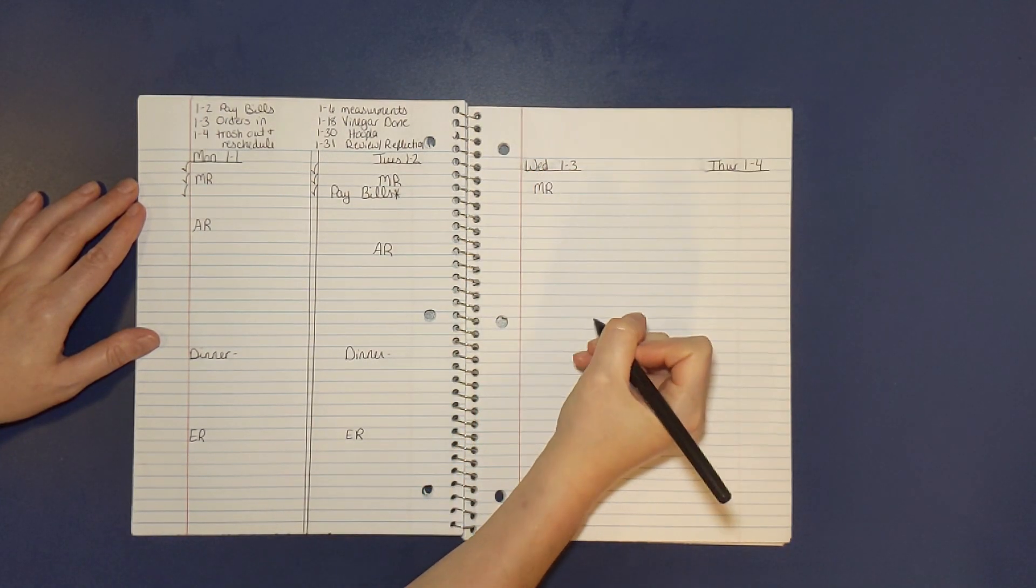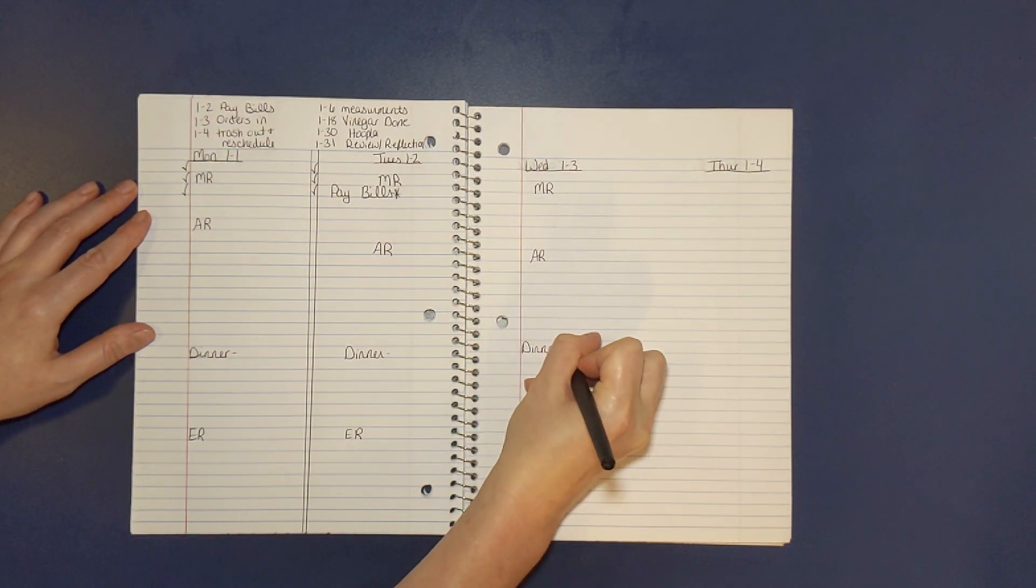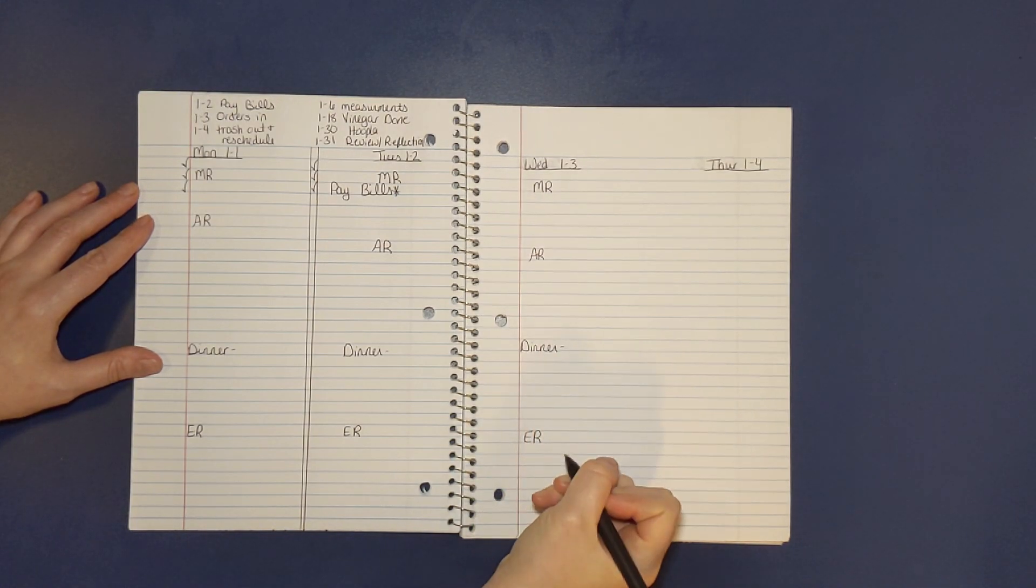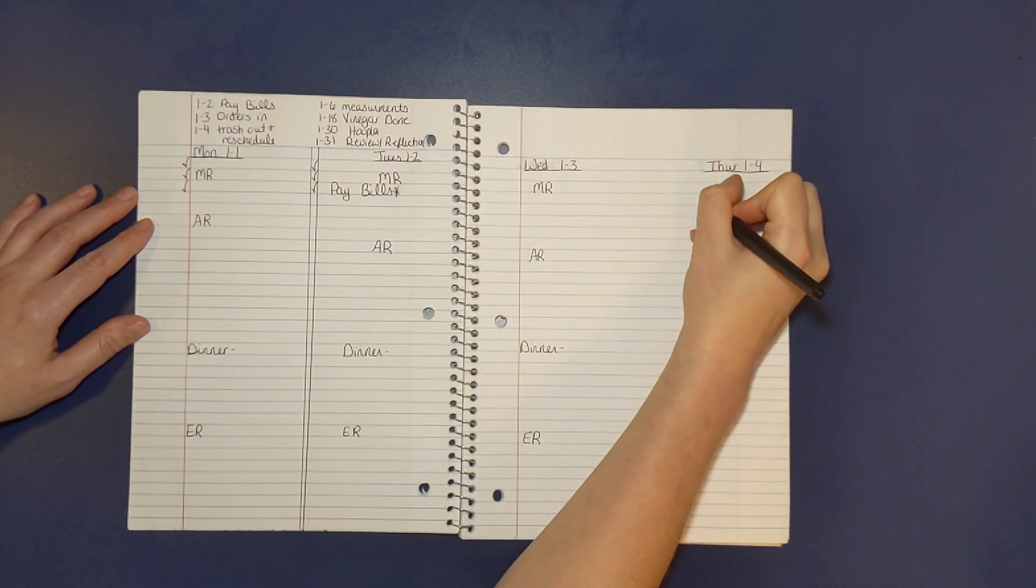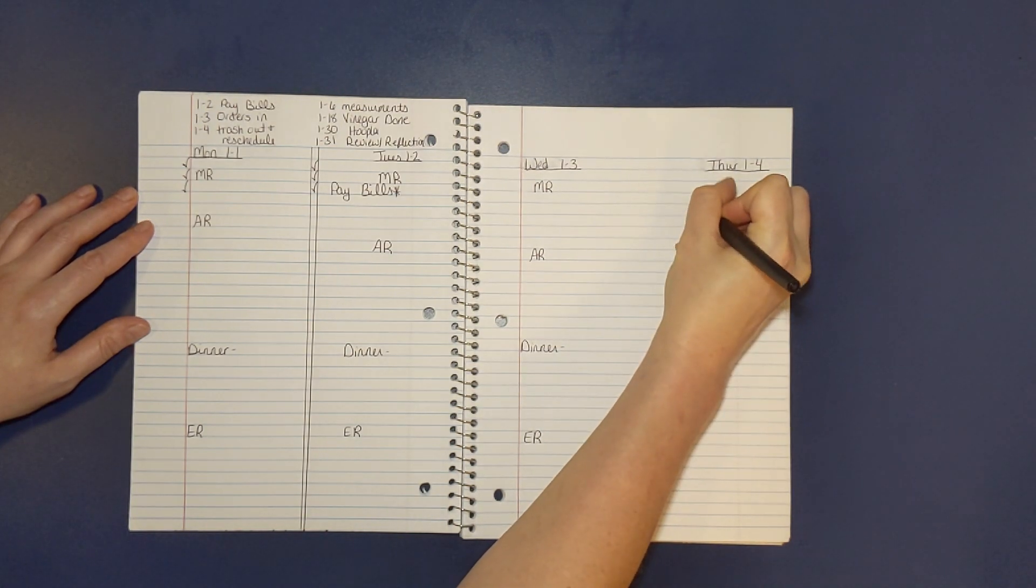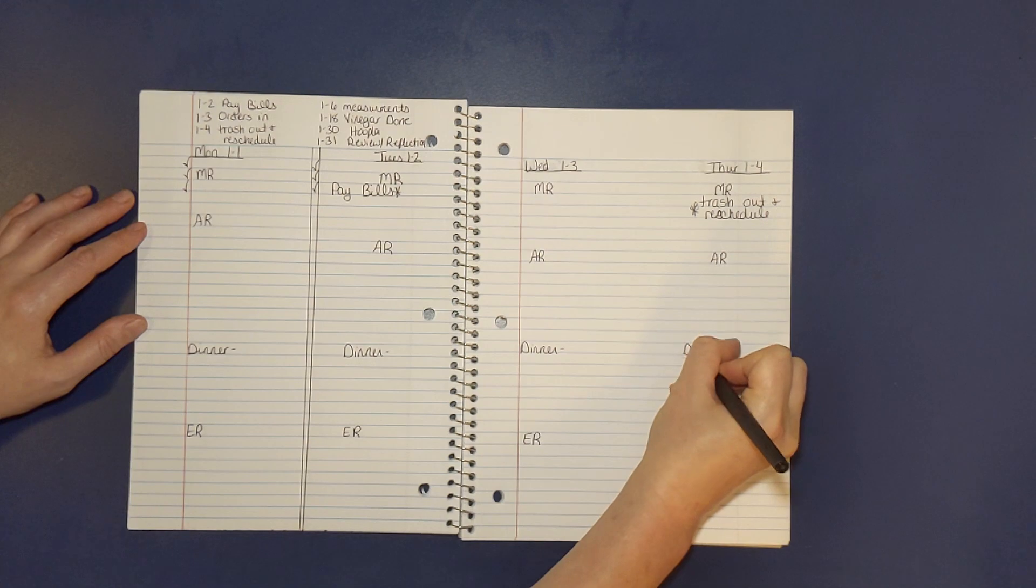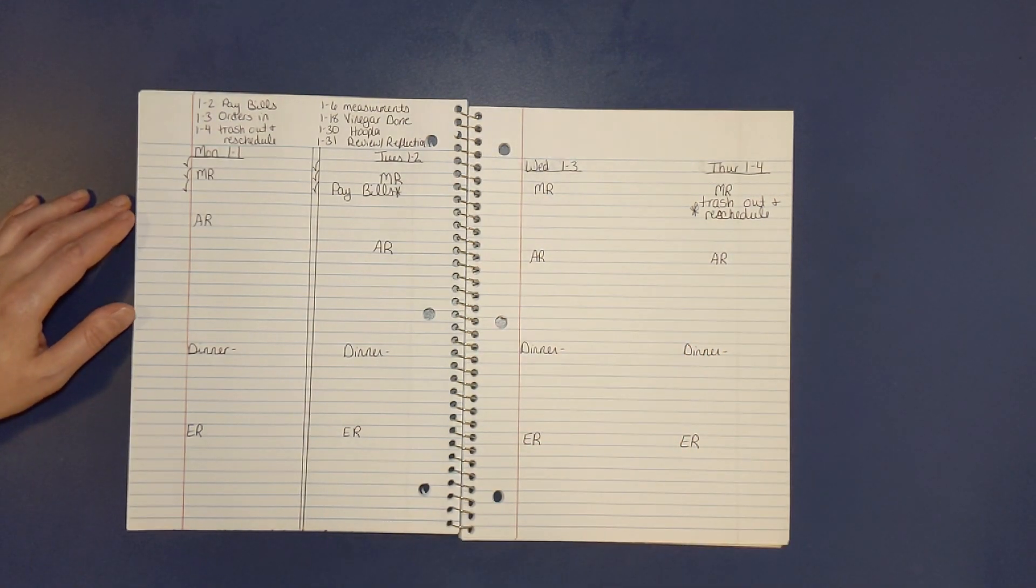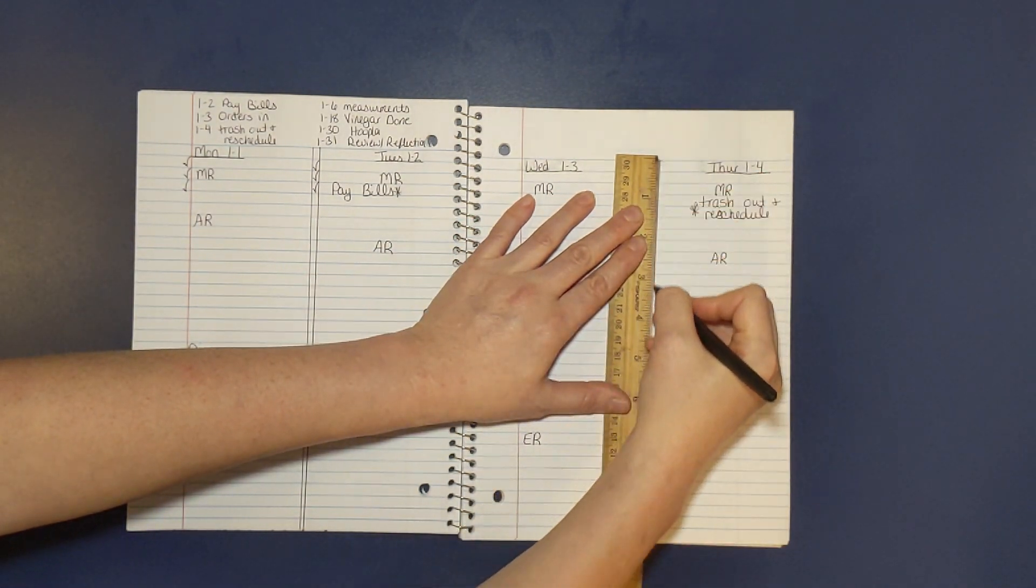On the 3rd, I add the same morning, afternoon, and evening routine, as well as dinner. On the 4th, I add my morning routine, as well as a reminder to take out the trash. I also add to reschedule this. Adding this has helped me a lot to remember to transfer this to the next week. Then I need to make a column for my checkbox.